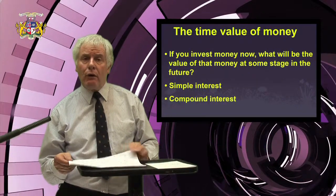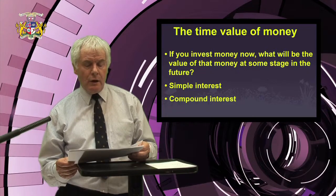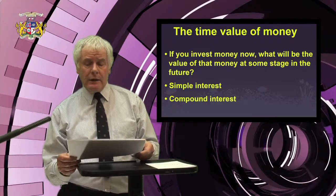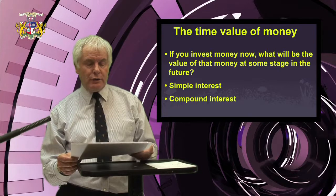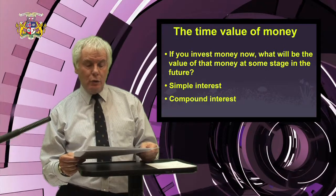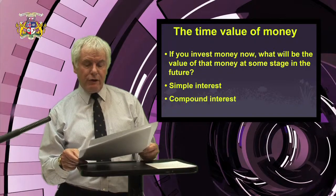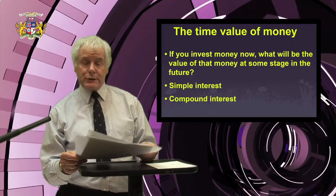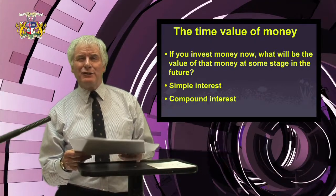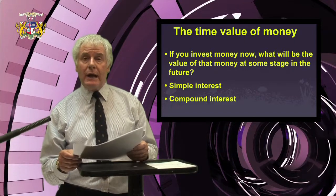Element three is the time value of money. If you are planning to invest, it is important to recognise the value of money over time — if you invest money now, what would its value be in the future? The amount you invest should grow due to earning interest. This can be simple interest, earned only on the original investment, or compound interest, where the interest earned in the first year is added onto the original investment sum, and interest is then paid on both the original amount plus the accumulated interest, meaning your interest is also earning interest.